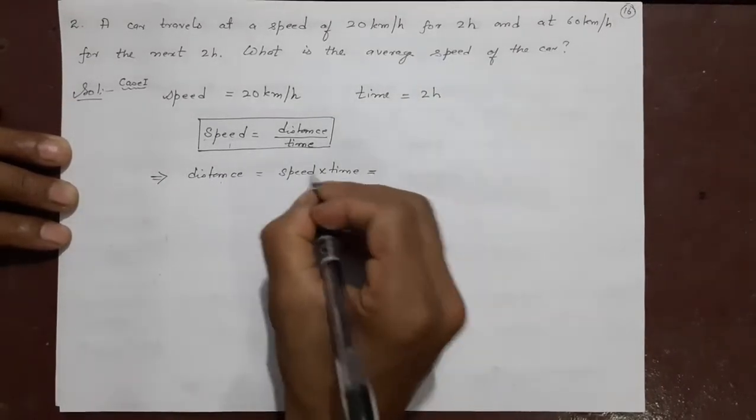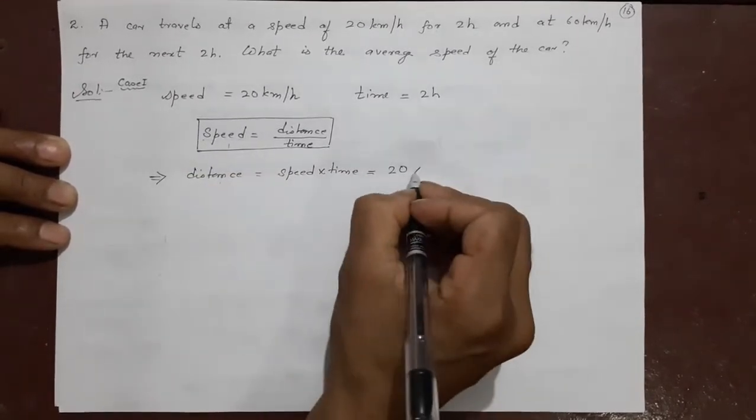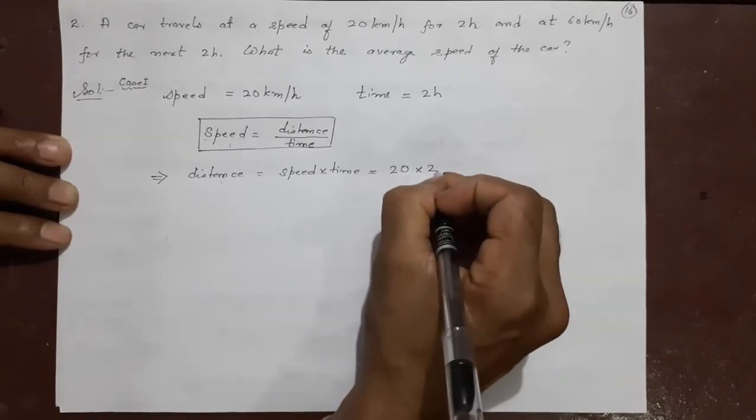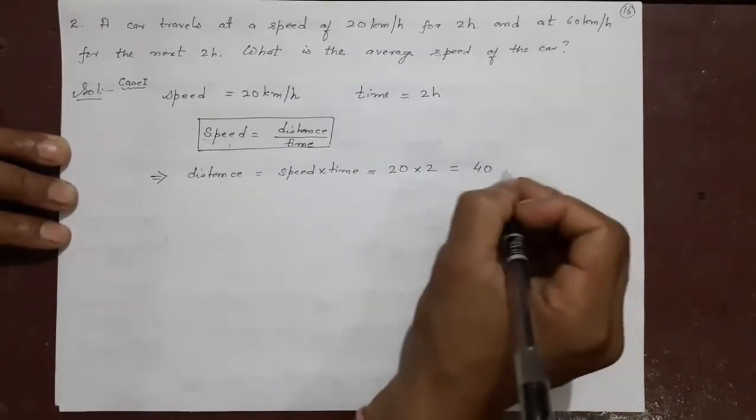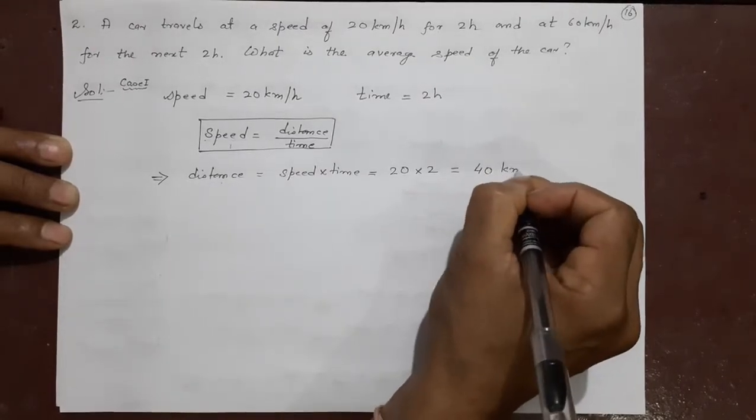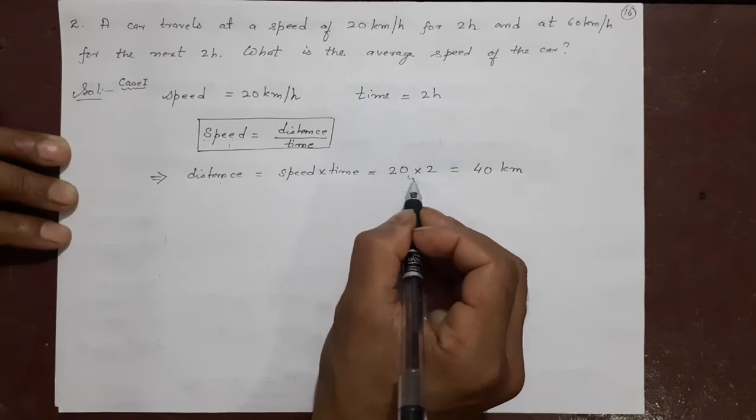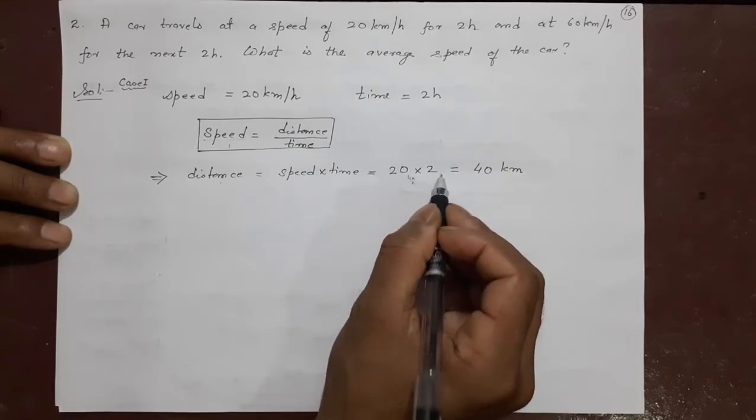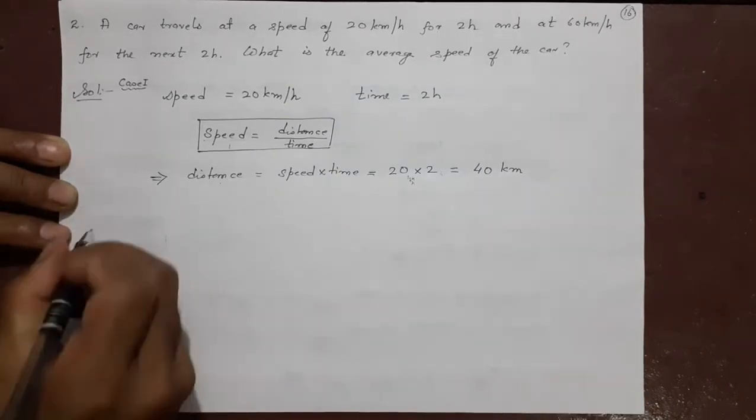Speed is 20. In place of speed, I kept 20. What is time? 2 hours. So it is becoming 40. What is distance? Kilometer. Why kilometer? Here it was kilometer per hour. Here it is hour. Hour and hour cancel. Kilometer is remaining. So this is case 1 done.